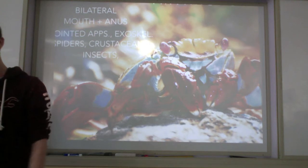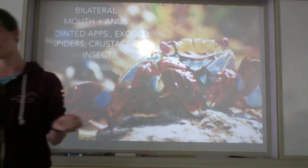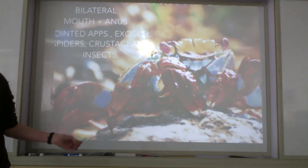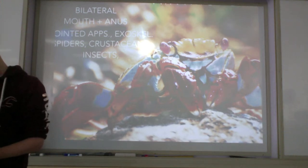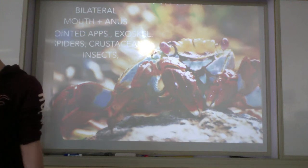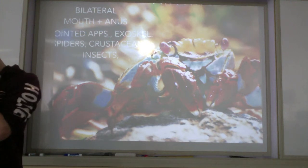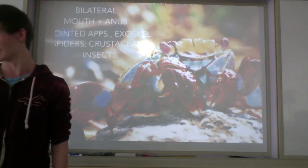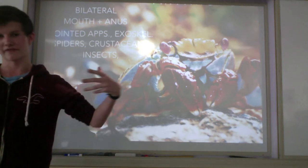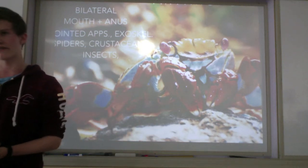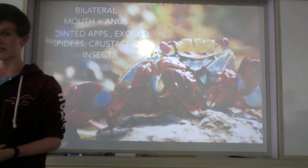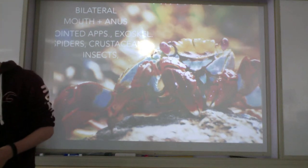Last but not least, we have Arthropoda. They have bilateral symmetry, a mouth and anus, and defining features are their jointed appendages and exoskeleton. Examples include spiders, crustaceans, and insects. They are known as the most successful group of any organism due to their versatile skeleton, their process of metamorphosis, and their metameric body structure. Scientists estimate about 30 million species are alive today, and we've only identified about 1 million so far.